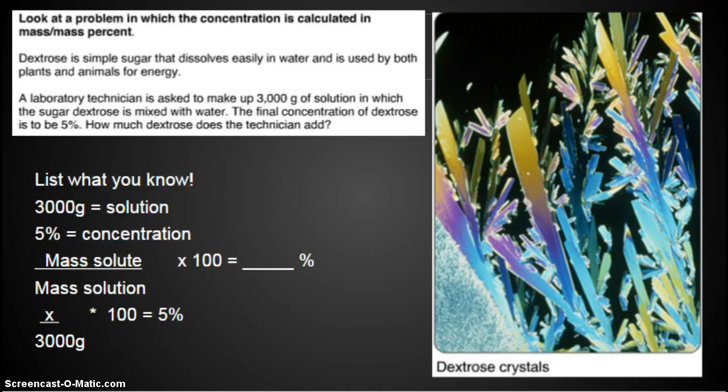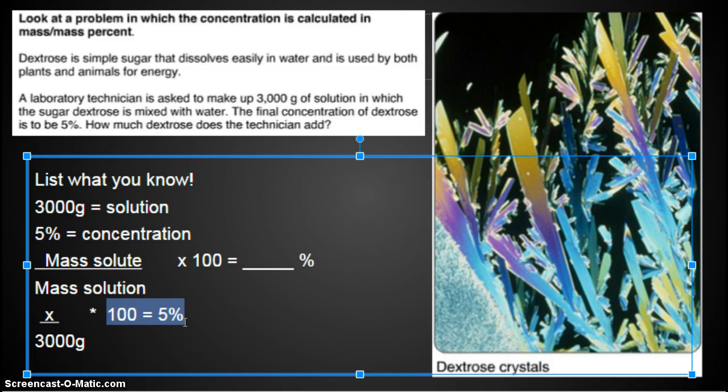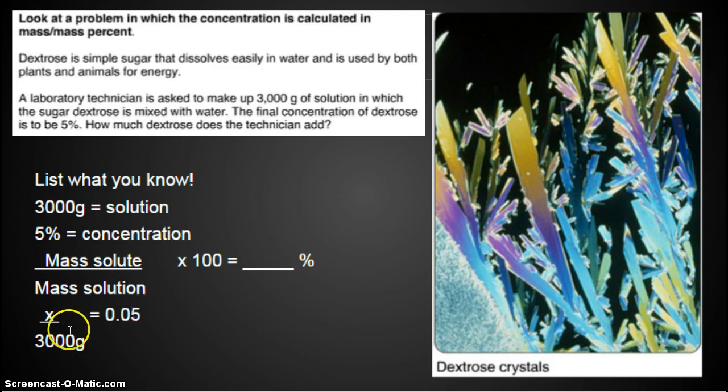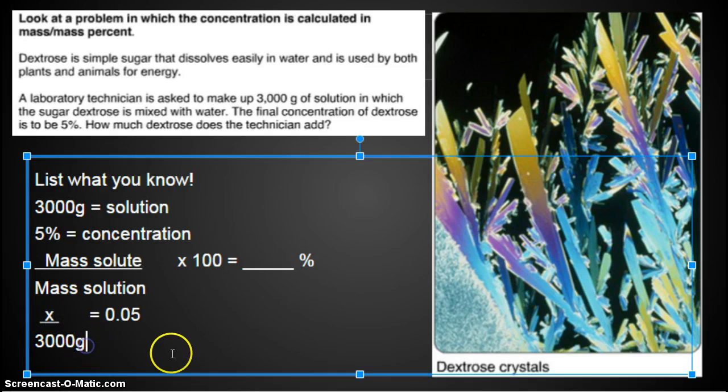Look at your cheat sheet. What formula is going to use this stuff? So I have the mass of solution and I have the concentration. My formula is mass solute divided by mass solution times 100 equals a percentage. So we plug in our numbers. X is what we're solving for because we don't know our mass solute divided by our mass of solution, which is 3,000 grams, times 100 equals 5 percent. Now we're going to change this 5 percent right away by dividing it by 100.